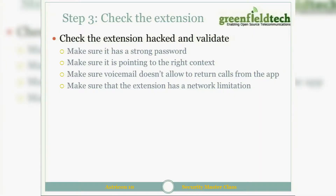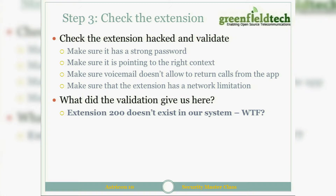Check the extension hacked and validate. We've seen calls going out from extension 200, which means extension 200 was exploited. Let's check if it has a strong password, if it's pointing to the right context inside Asterisk. Make sure voicemail doesn't allow return calls from the app itself - misconfiguration of that is one of the biggest pitfalls in Israel. Make sure the extension has a network limitation. But in our case - the result was there is no extension 200. There never was.